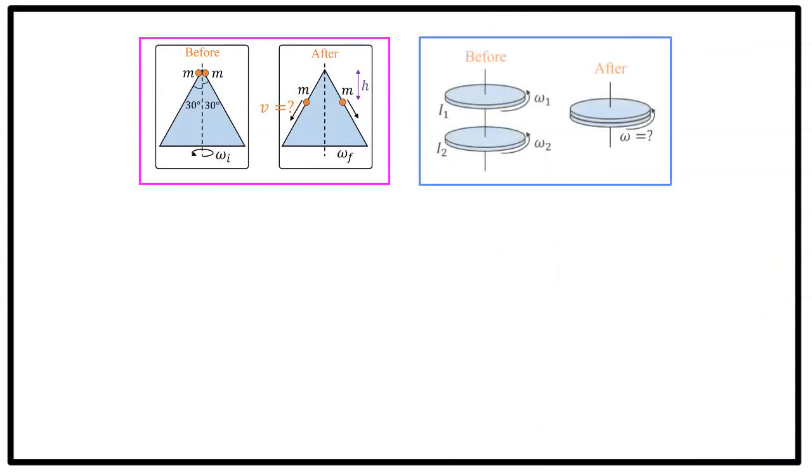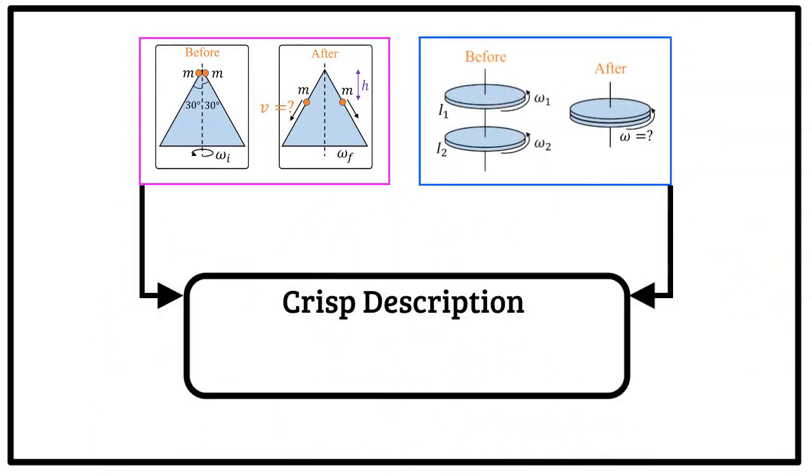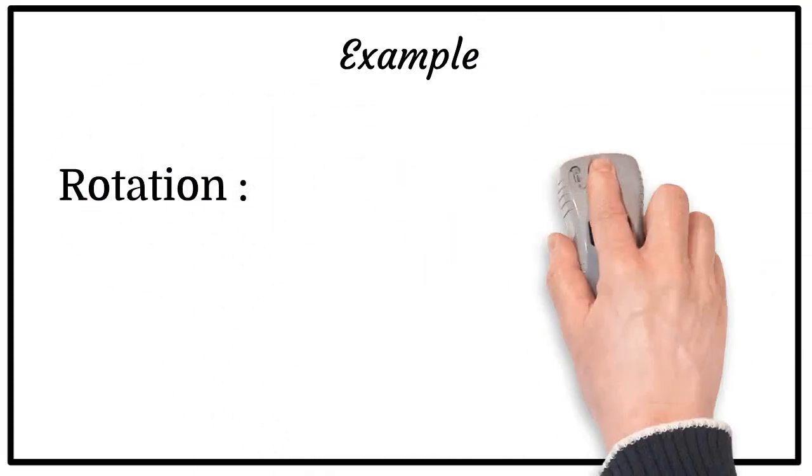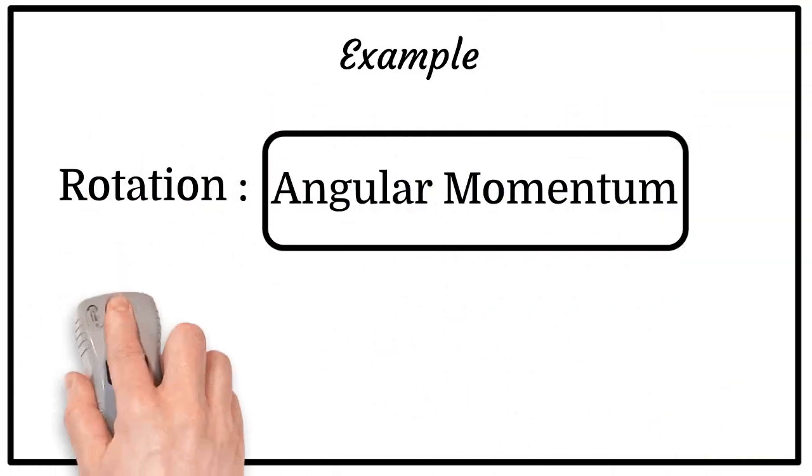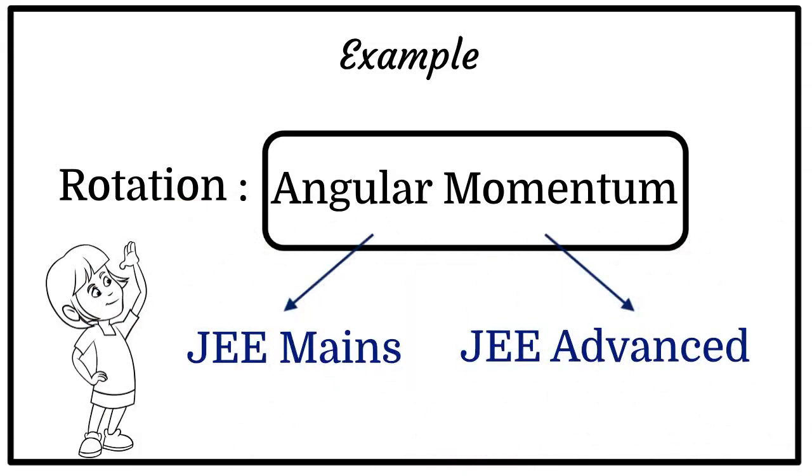With the visuals of question types, AceJEE also provides the description of the question type along with the questions asked in the previous JEE examinations. Without further ado, let's take an example of the question types belonging to angular momentum in rotation. Let's see what types of questions are coming in JEE Mains and Advanced related to angular momentum.